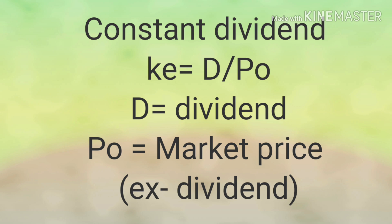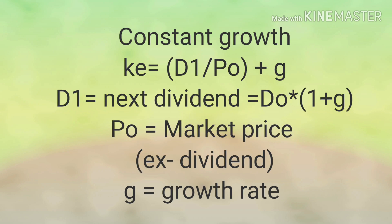If we assume that the dividend is growing at rate G, the formula becomes KE = D1 / P0 + G, where D1 = D0 × (1 + G) and G is the growth rate. In the case of a new equity share issue, we apply the concept of net proceeds: if there is a flotation cost, we reduce it from the market price, and use net proceeds instead of P0.